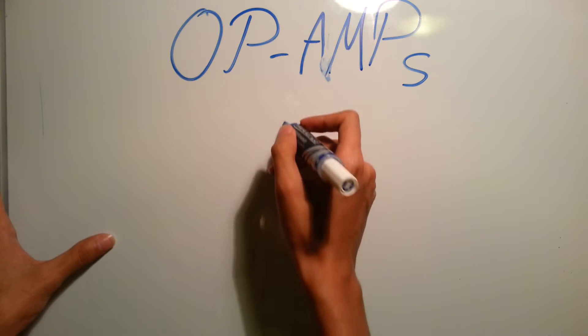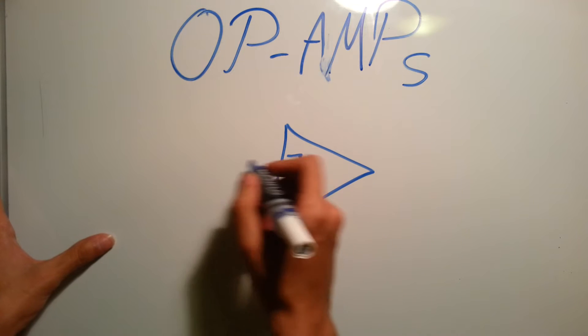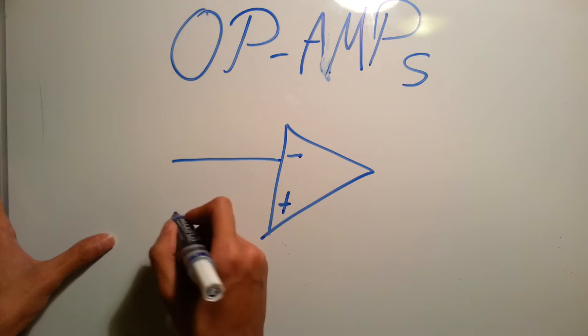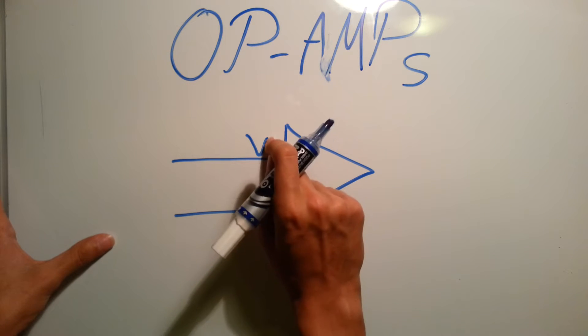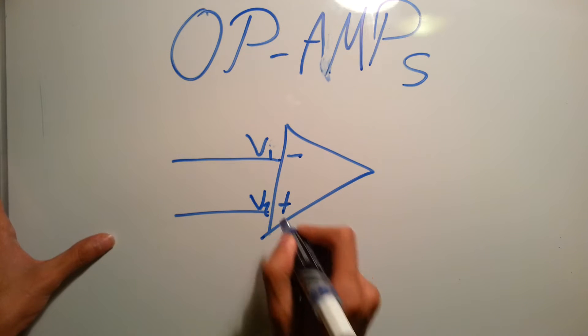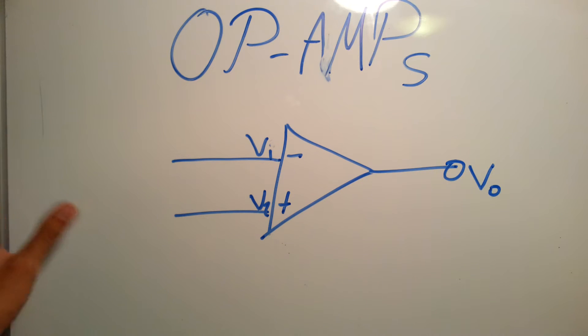So first of all let me explain how do we draw it. It's drawn this way: you have a negative over here, positive, and there's the V input 1, the input 2. Let's keep it V1 and V2 directly, and this is the V output.